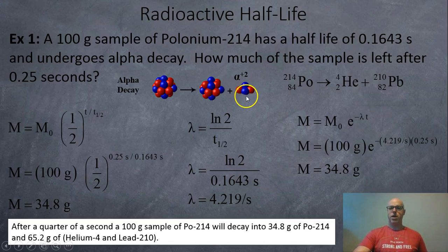So here we got the alpha particle, the particle turning into a smaller particle plus an alpha particle. So your polonium-214 turns into helium-4, which is just an alpha particle, plus lead-210. And so we're looking at mass, we use M, so we have a 100 gram sample.